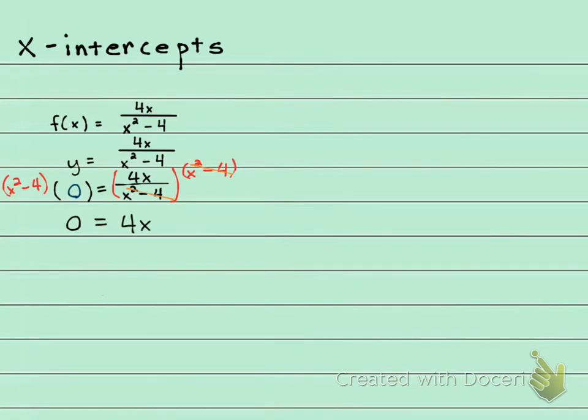One more step to get my x by itself. I'm going to divide both sides by 4. 0 over 4 equals 0. These 4s reduce, so 0 equals x, x equals 0.